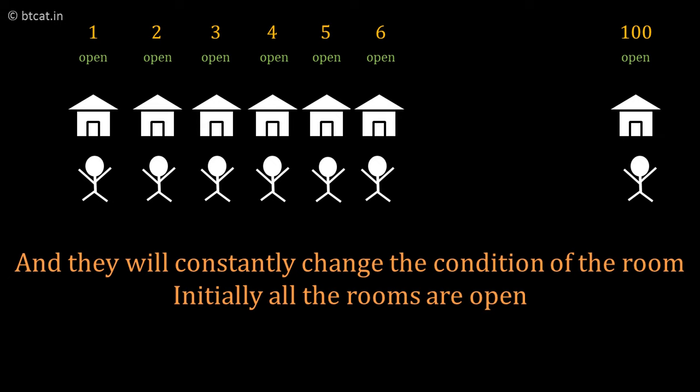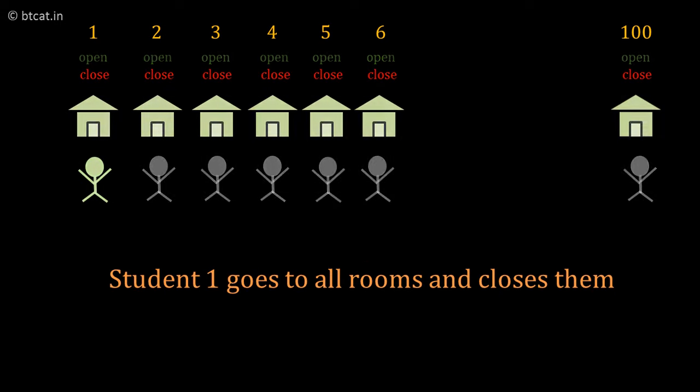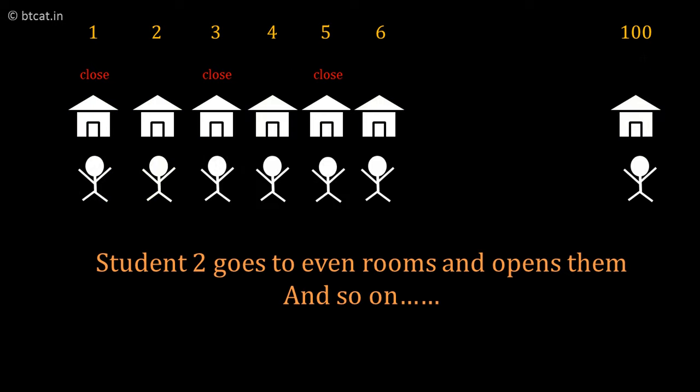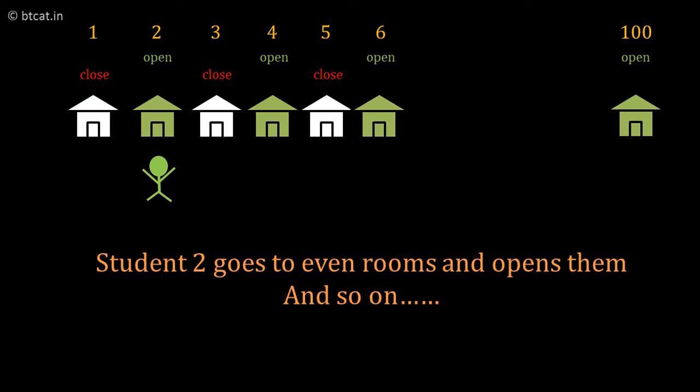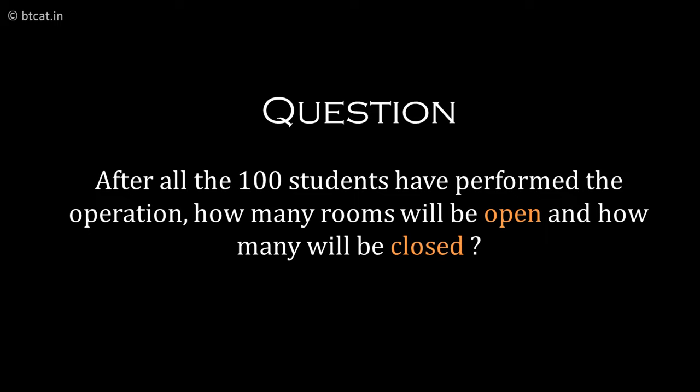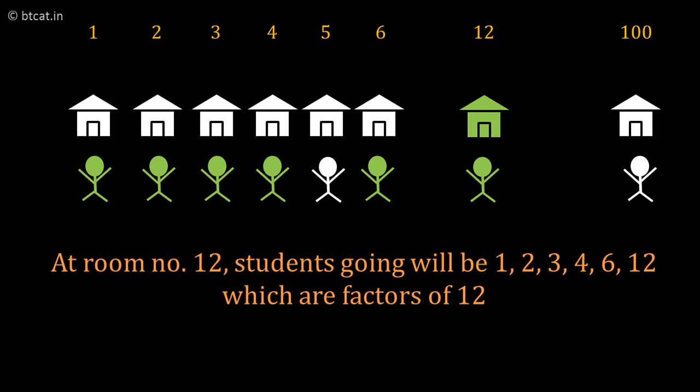Initially all 100 rooms are open. Student number one goes to all rooms and closes them. Student number two goes to all even-numbered rooms and opens them again, and so on. After all 100 students have performed the operation, how many rooms will be closed and how many will be open? This is a very good conceptual exam question.